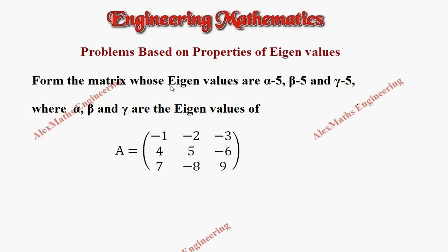We have to form the matrix whose eigenvalues are alpha minus 5, beta minus 5, and gamma minus 5, where alpha, beta, and gamma are the eigenvalues of this matrix A. So all the eigenvalues are subtracted by 5.